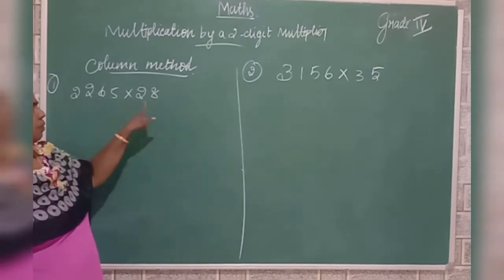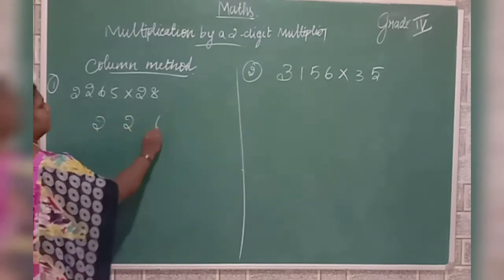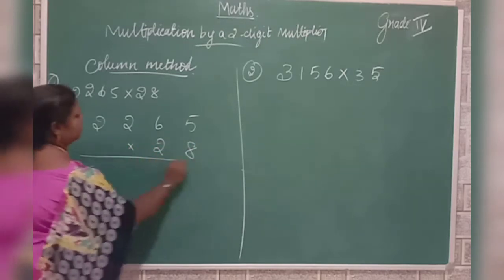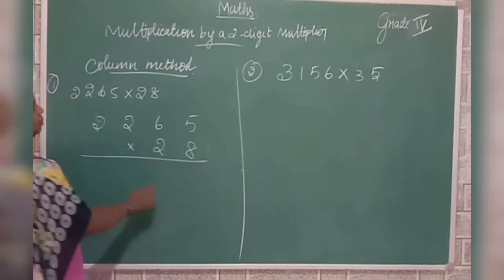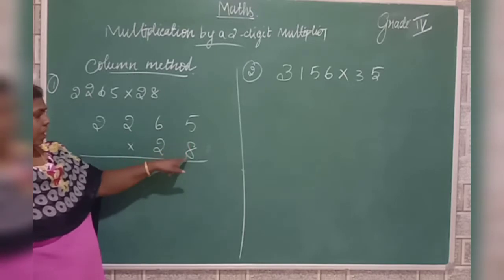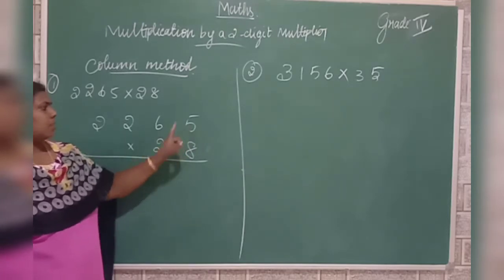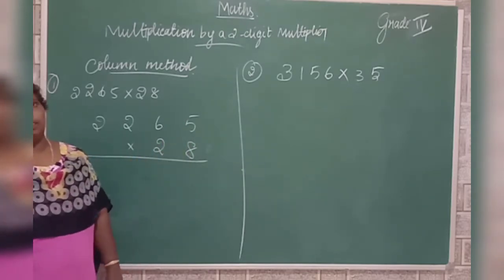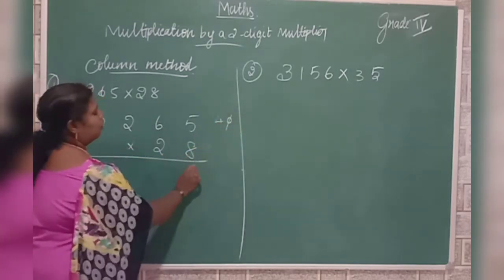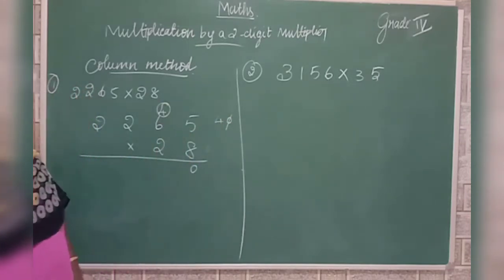See here: column method. 2265 into 28. Here, 28 is the multiplier. First we use the 8th table. 8 times 5 is 40 — write 0, carry 4. 8 times 6 is 48, plus 4 is 52 — write 2, carry 5. That is a two-digit number so you write the units digit and carry the tens digit.